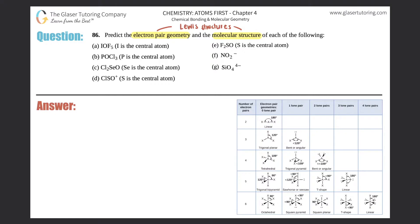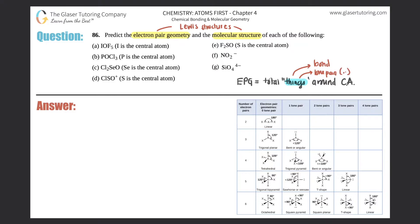As a quick refresher: electron pair geometry (EPG) is the total number of things around the central atom. Those things are either bonds — one single bond, one double bond, or one triple bond — or lone pairs (two dots). Two dots represent one thing. One single bond is one thing, one double bond is one thing, and one triple bond is one thing.